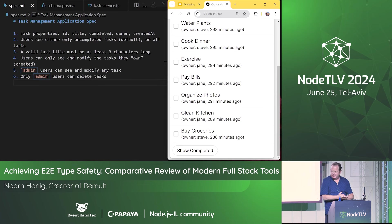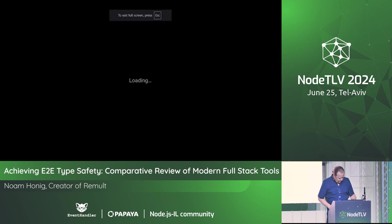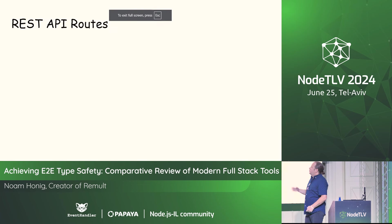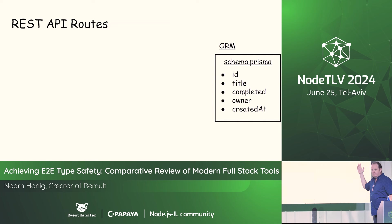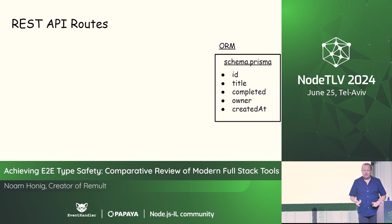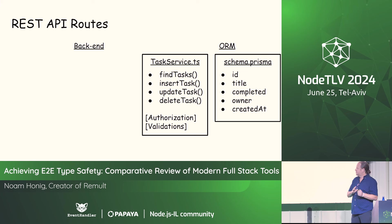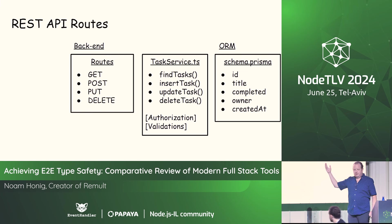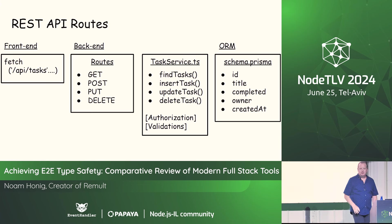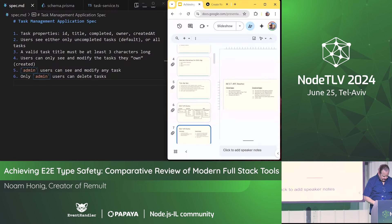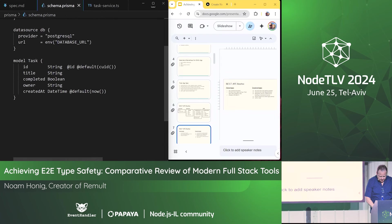So back to our presentation. When talking about REST API routes: our application has an ORM — we're using Prisma in this demo, but it can just as well be Drizzle, Sequelize, TypeORM, MikroORM, whatever. We'll have a task service responsible for finding, inserting, updating, and deleting tasks — handling authorization and validation. We'll have a route layer with GET, PUT, POST, DELETE, and a front end consuming that using the fetch API.